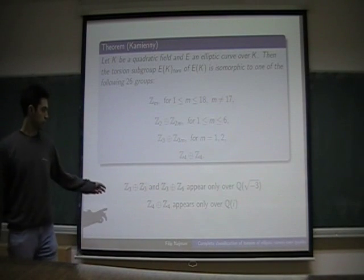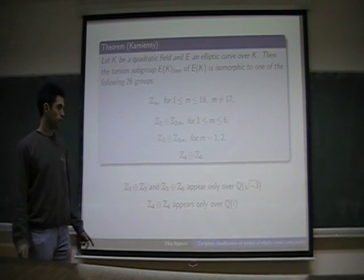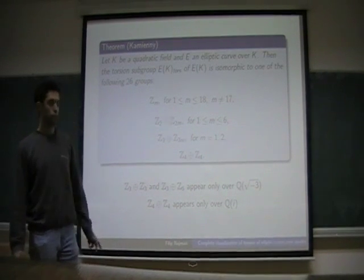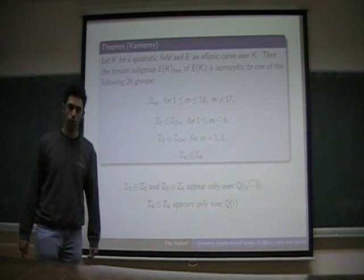What's more, Z/3Z plus Z/3Z and Z/3Z plus Z/6Z appear only over the field Q(√-3), and Z/4Z plus Z/4Z appears only over Q(i).